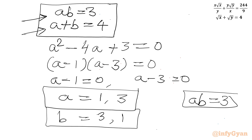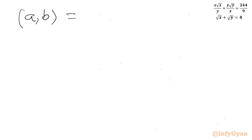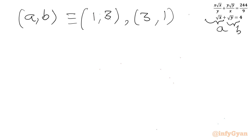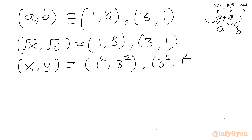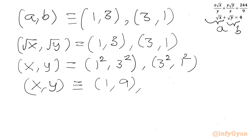The ordered pairs (a, b) are (1, 3) and (3, 1). Since a = √x and b = √y, we have (√x, √y) = (1, 3) or (3, 1). Squaring to find x and y: the final real solutions are (x, y) = (1, 9) and (x, y) = (9, 1).